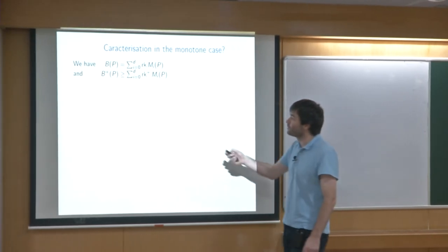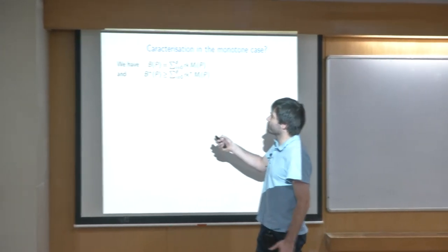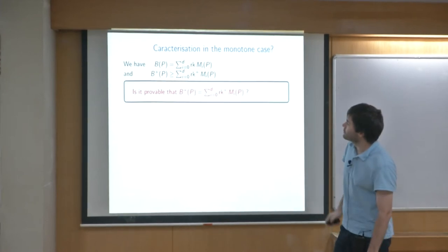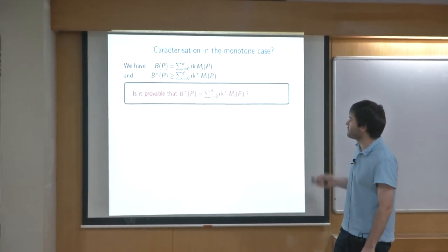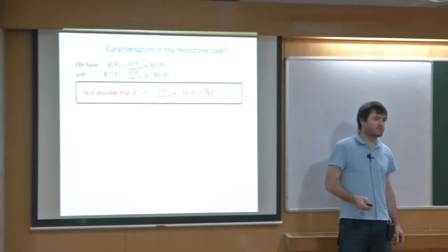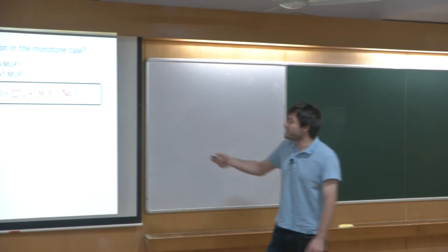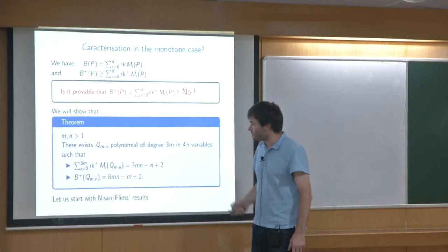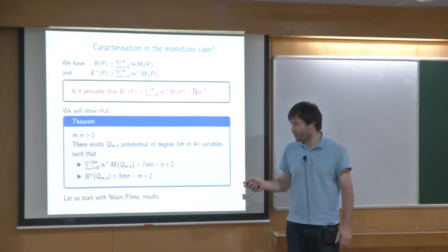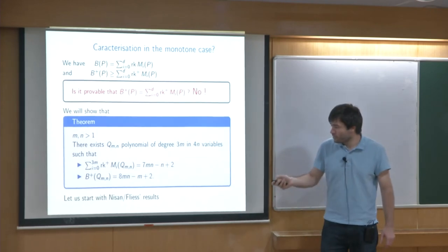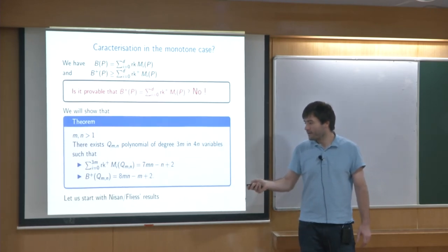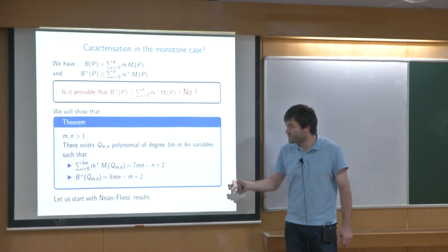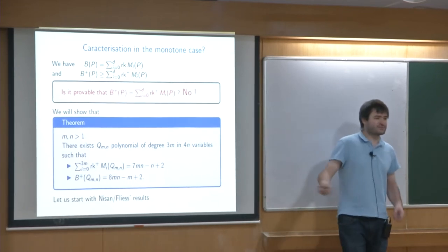So to restate: we have a characterization for the minimal size of a non-commutative ABP (exactly the sum of the ranks), and only a lower bound for monotone ABPs. The question is: can we get equality? We will prove that no — there are cases where the minimal monotone ABP is strictly larger than the sum of the non-negative ranks. More precisely, we show there exists a polynomial of degree 3m and 4n variables such that the sum of the non-negative ranks is 7mn but the size of the minimal monotone ABP is 8mn — an additive gap in the number of variables and degree.